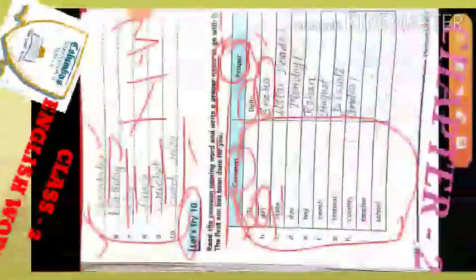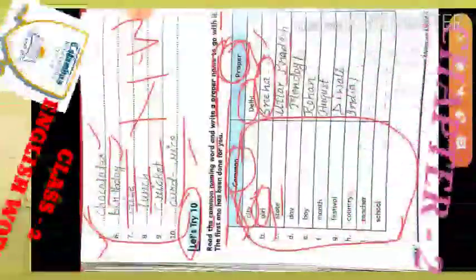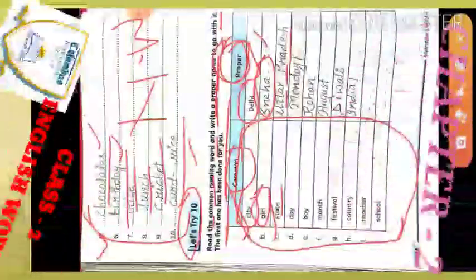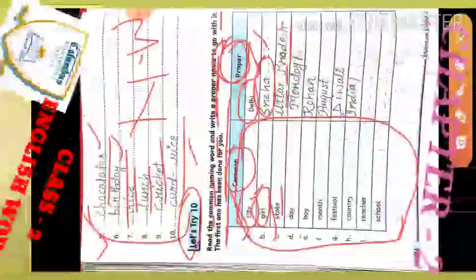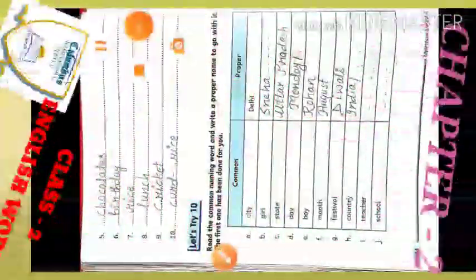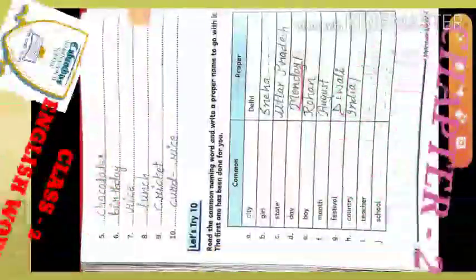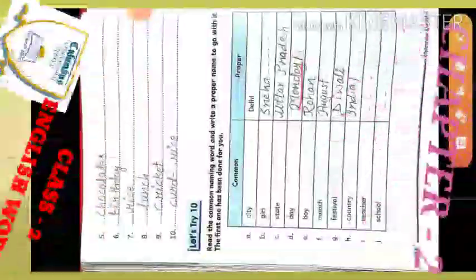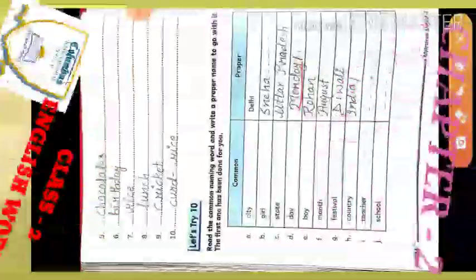Next is 'state.' State is in common noun. For the proper noun, I have written Uttar Pradesh, but if you belong to any other state, you can mention your own state or any other state. Next is 'day' — I have written Monday, but if you want to change it, you can write Tuesday, Wednesday, Thursday, Friday, Saturday — any day you want.